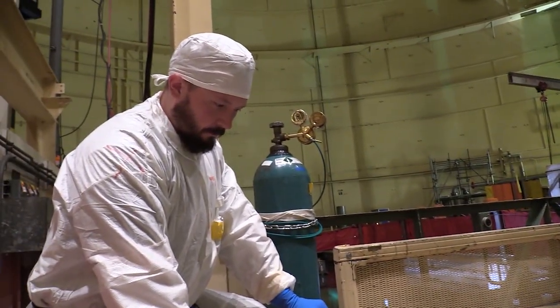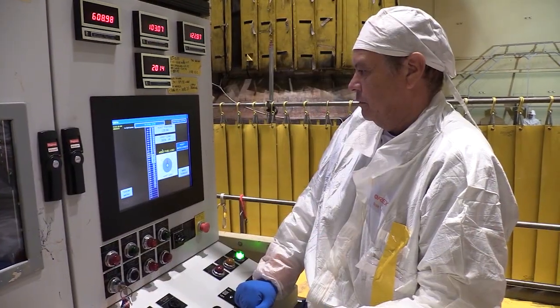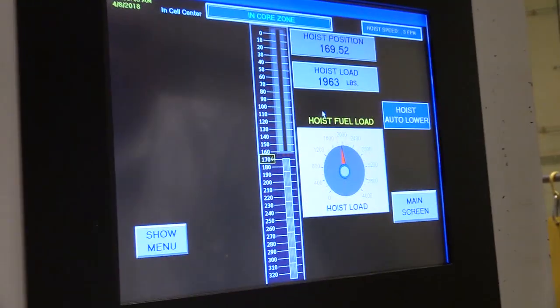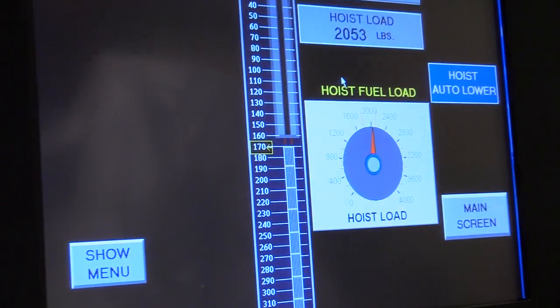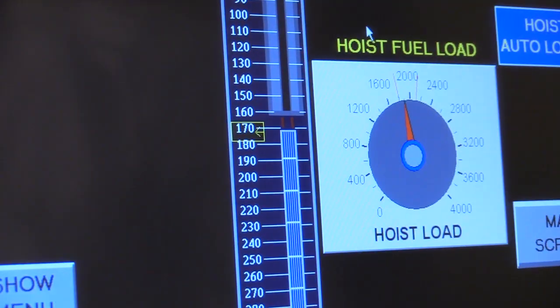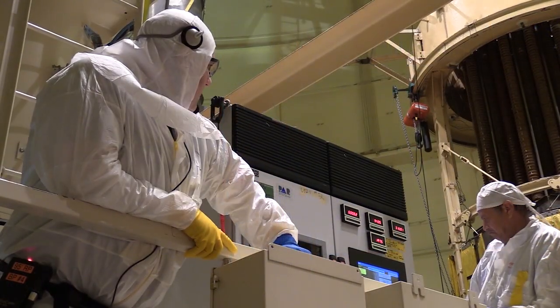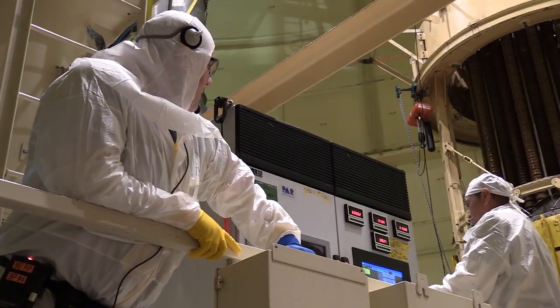During refueling outage to Romeo 23, 88 of these 193 fuel assemblies are being replaced with new ones at the cost of approximately $1 million each. This new core will allow Indian Point 2 to operate for the length of its final two-year cycle.